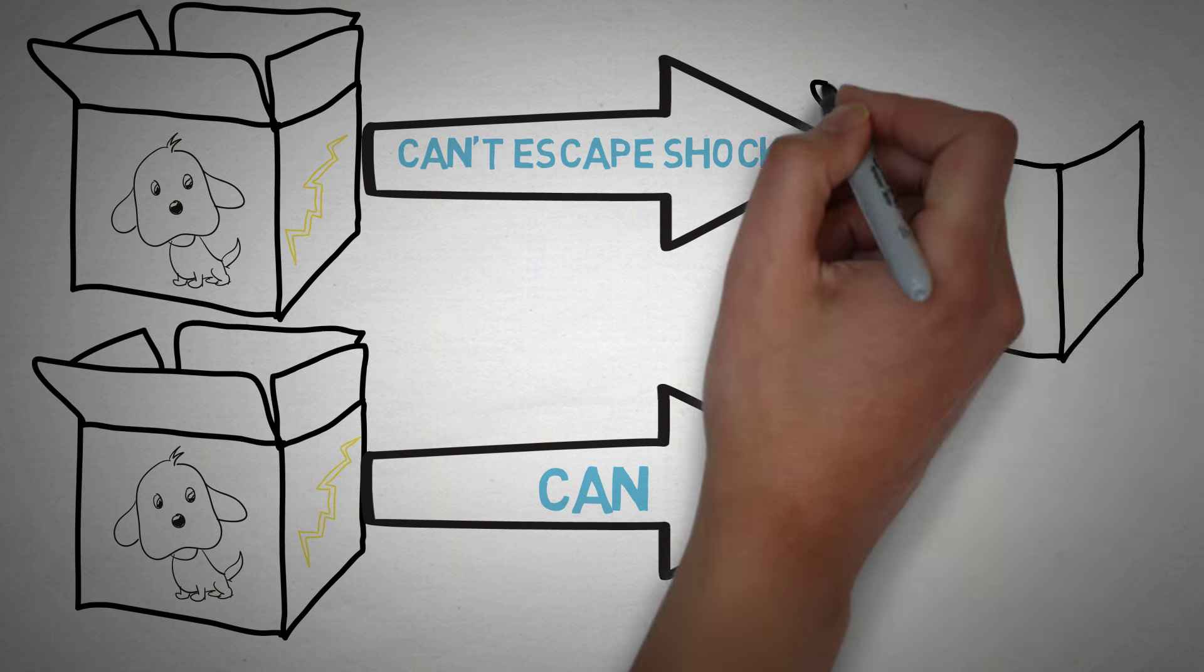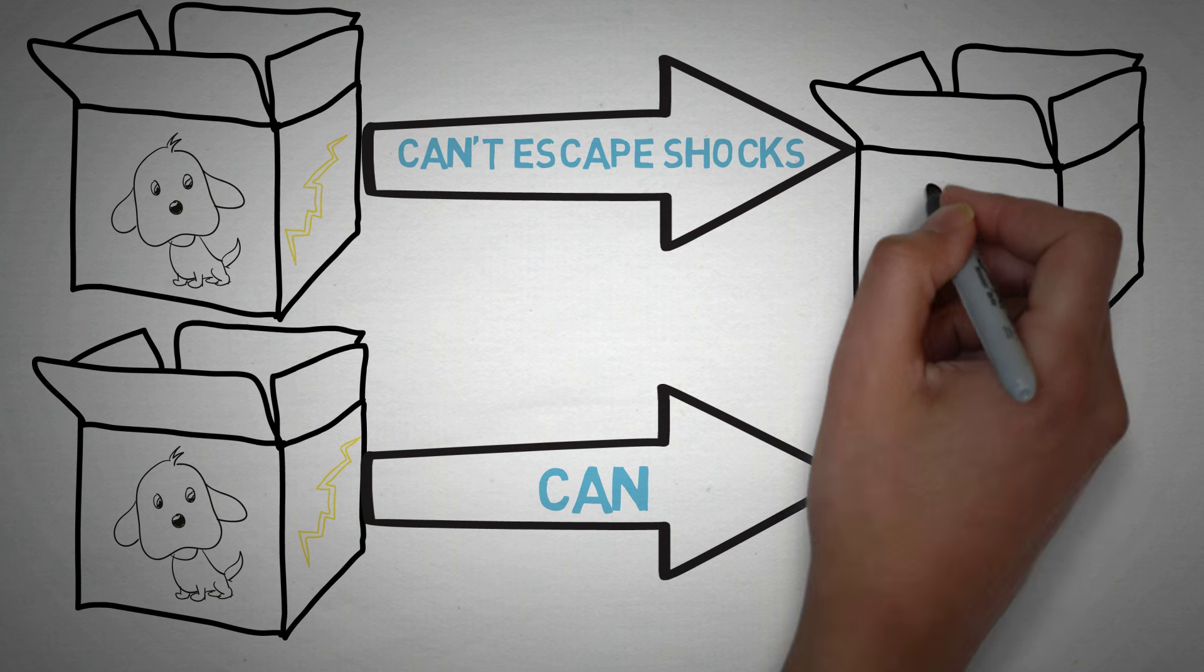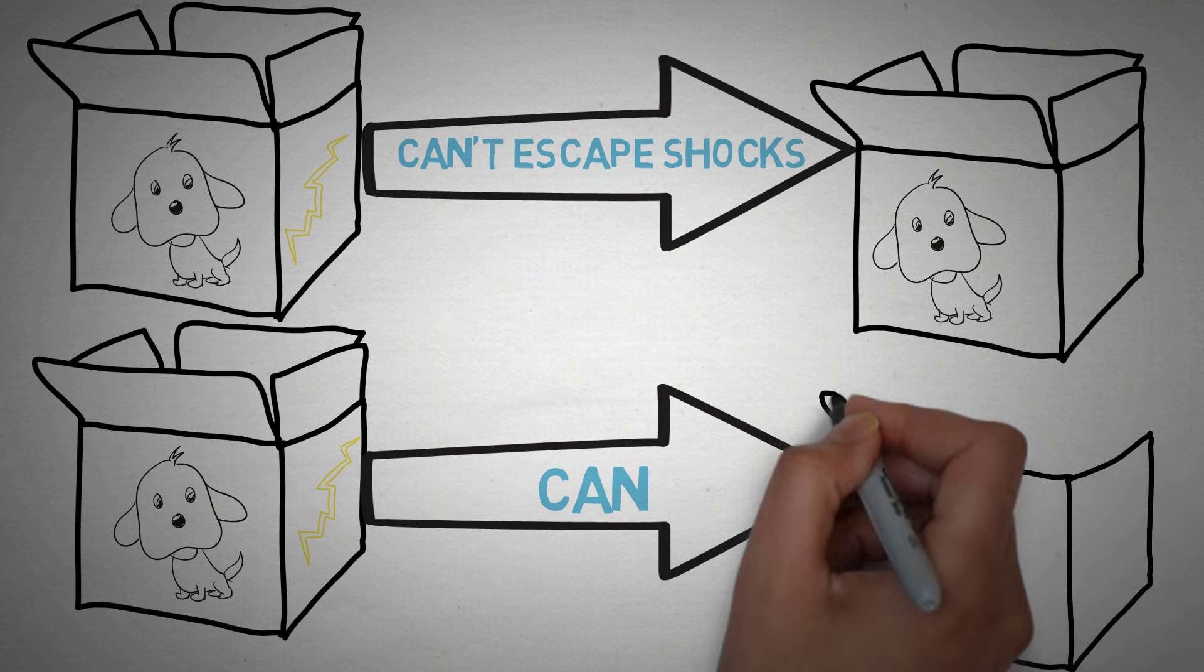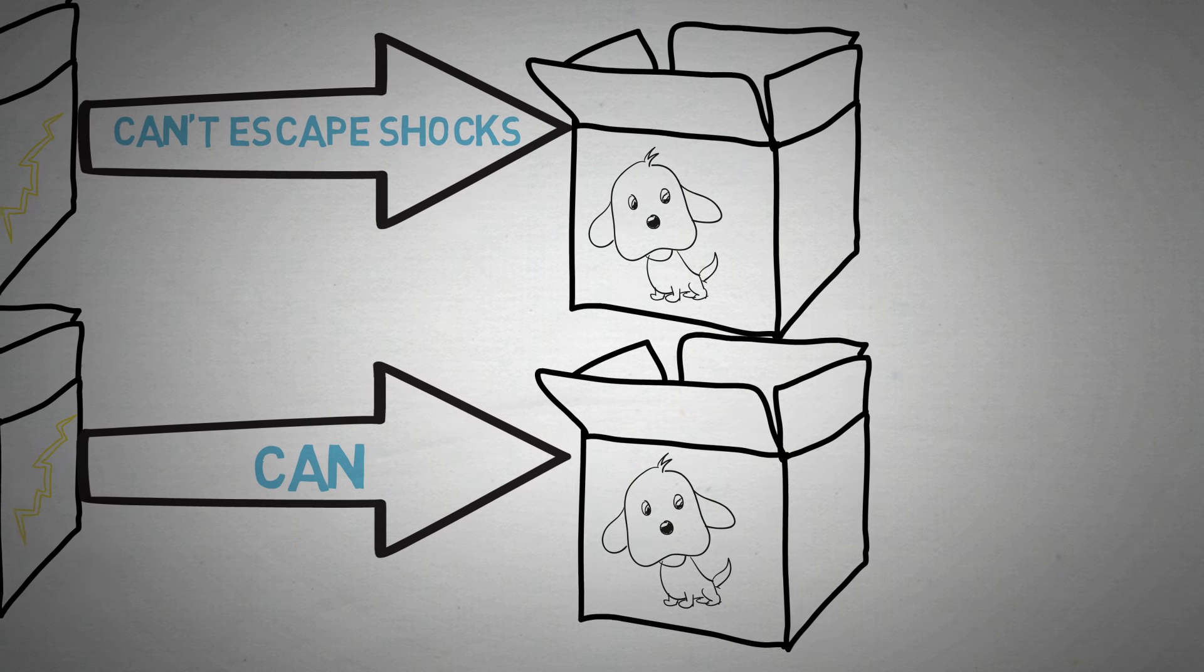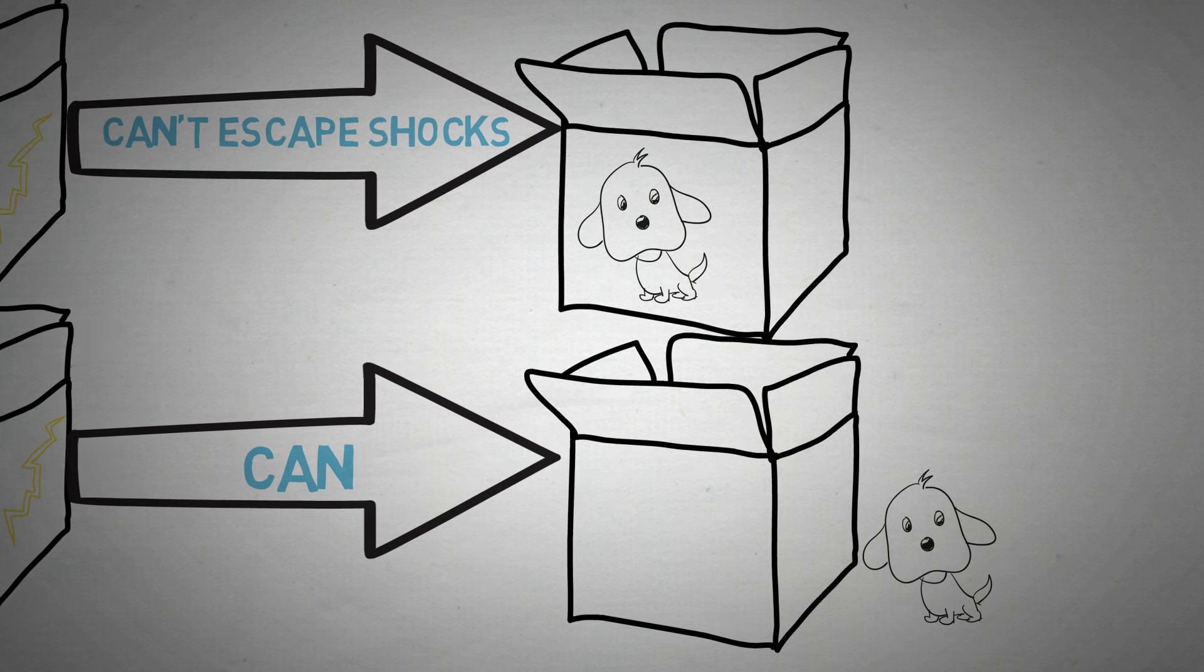Now we take the two same dogs and put them in new boxes and shock them. Do you know what happens? The dog that could get out before learned that he could jump out of the box. The other dog, however, knows that there is nothing he can do, so he just lays down. And this is called learned helplessness.